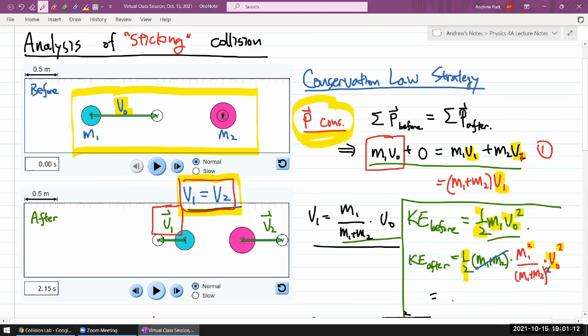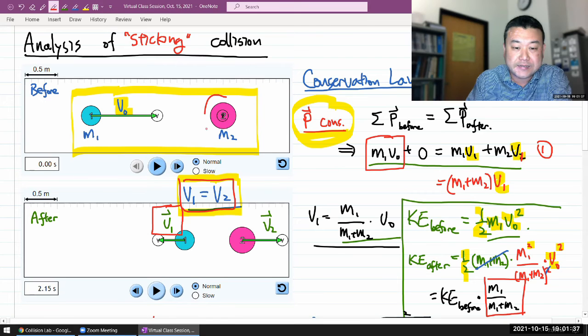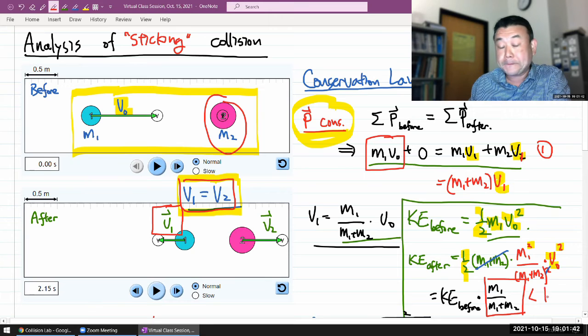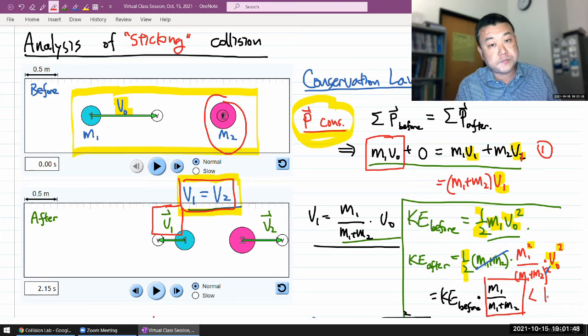what it looks like is kinetic energy after is kinetic energy before times a factor. And the factor will be M1 divided by M1 plus M2. And you can stare at this ratio for a bit and realize, if M2 is anything other than zero, as in if this mass exists, then this ratio is going to be less than one. So your kinetic energy after the collision is going to be less than kinetic energy before the collision. Kinetic energy is not conserved.